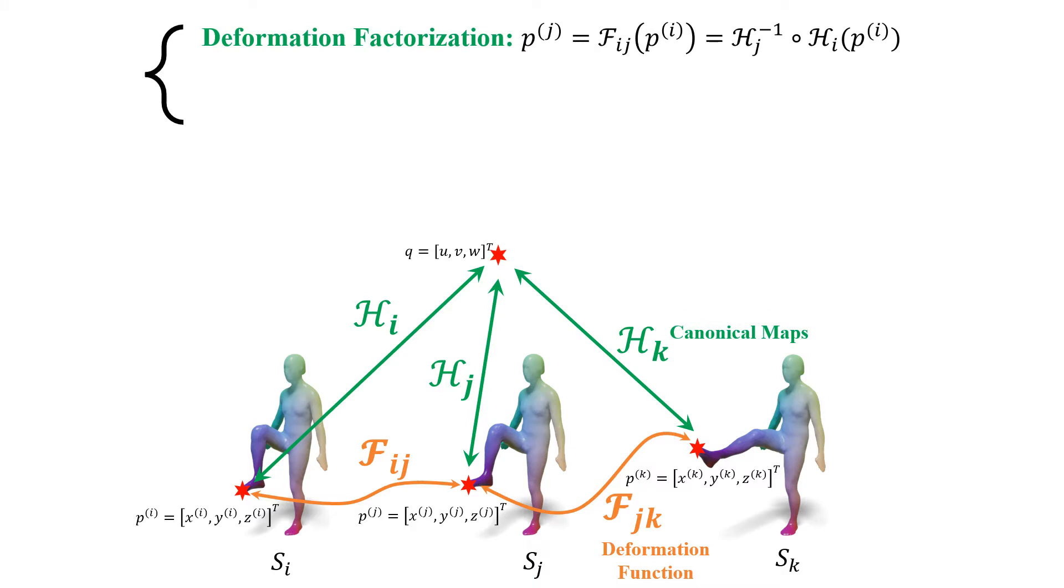Instead, we propose a novel factorization for the deformation. We model the deformation function as the composition of the forward and the inverse of bijective canonical maps, which map the points on the deformed surface to a global canonical reference surface and then back to another deformed surface.